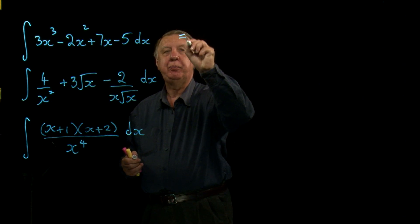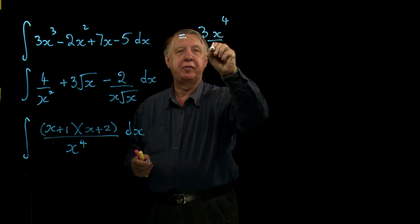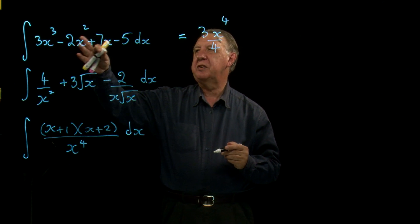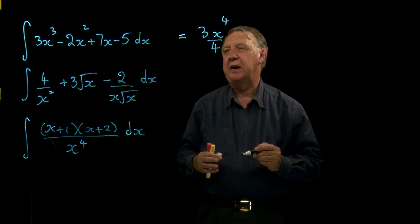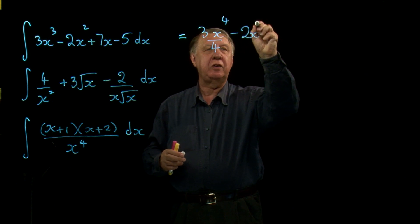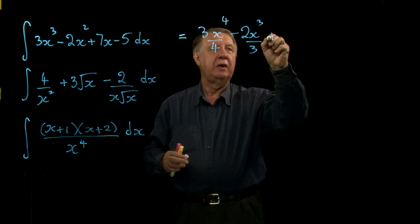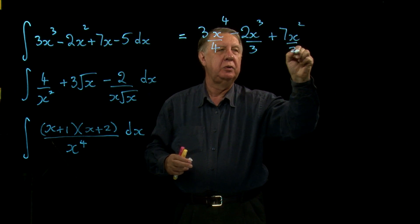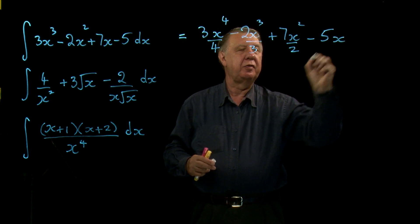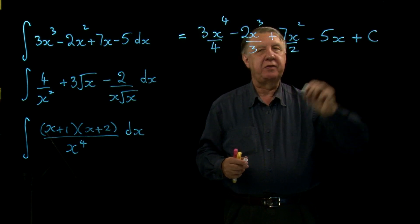So the first one, integrating x cubed is x to the 4 over 4. Notice I didn't mention the 3 because the integration part is really all to do with the powers of x. So we worry about the other numbers afterwards. Integrating x squared is x cubed over 3. Integrating x is x squared over 2. And finally, integrating 5 gives us 5x. And of course, plus c.